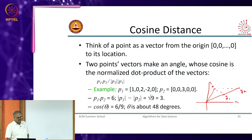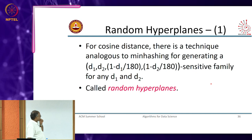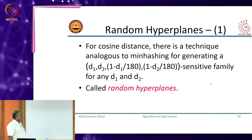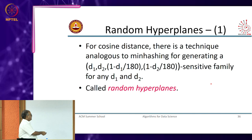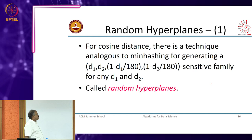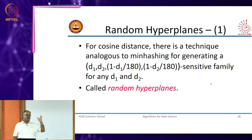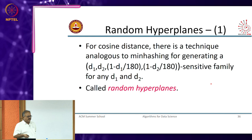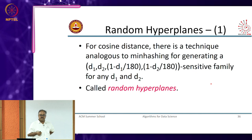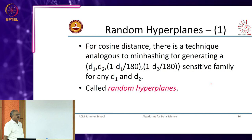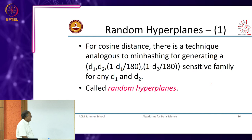Heading back to cosine distance: the goal is to design an LSH family for vectors compared using cosine distance. I can come up with a d1, d2, 1 minus d1/180, 1 minus d2/180 sensitive family. If the distance between two vectors is less than d1 then with probability at least 1 minus d1/180 the hash functions would agree, and if they are at least d2 apart then with probability at most 1 minus d2/180 the hash functions would agree. This technique is called random hyperplanes.